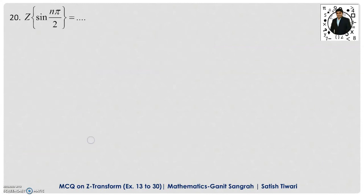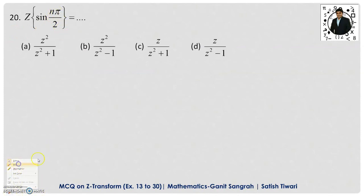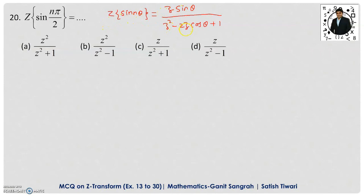Example 20: Z-transform of sin(nπ/2). Using the formula for Z-transform of sin(nθ), replace θ with π/2. sin(π/2) = 1 and cos(π/2) = 0. So numerator becomes z·1 = z, and denominator becomes z² − 0 + 1 = z² + 1. Therefore Z-transform of sin(nπ/2) = z/(z² + 1), and option C is correct.